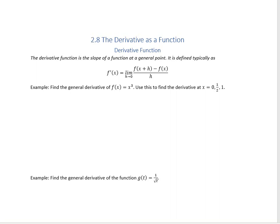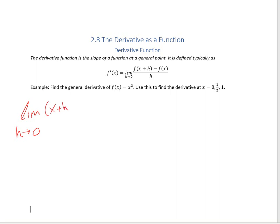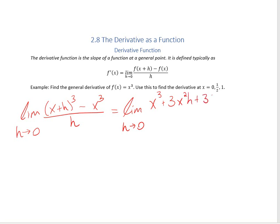Let's find the general derivative of f of x equals x cubed, and we want to use that to find the derivative at x equals 0, one half, and 1. Using the definition, we have the limit as h approaches 0 of x plus h to the third minus x to the third, divided by h. Expanding the top gives us x cubed plus 3x squared h plus 3x h squared plus h cubed minus x cubed, all over h.